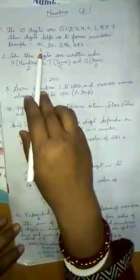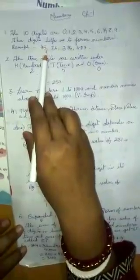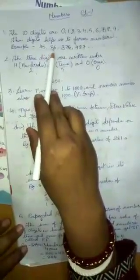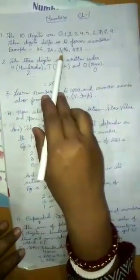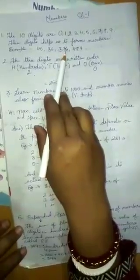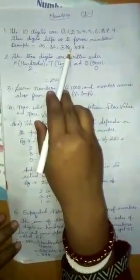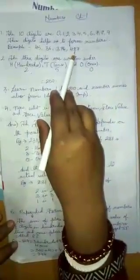These digits help us to form numbers like 2-digit numbers, 45, 36. Here we have 3-digit numbers: 376, 487.